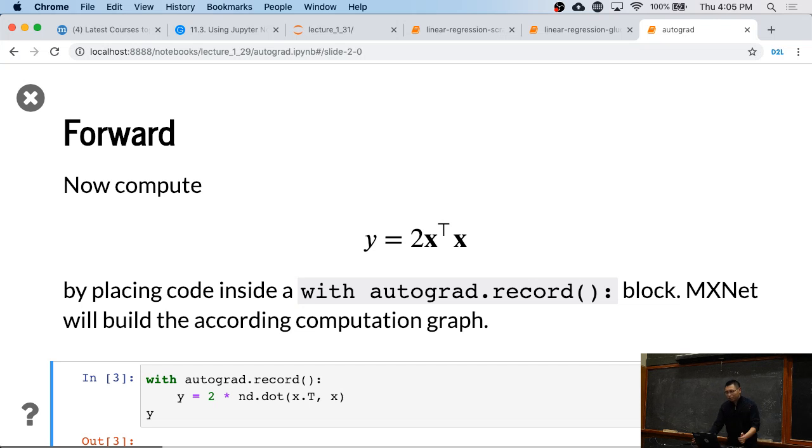Then now we're going to compute Y equals 2 times transpose X times X. The key thing here is we record this in the record scope. We mentioned that if you put the computation in the record scope, the system will record the trace and also build the computation for you.